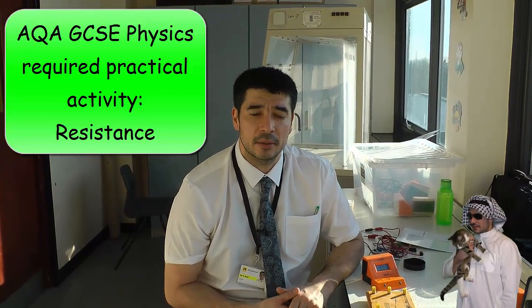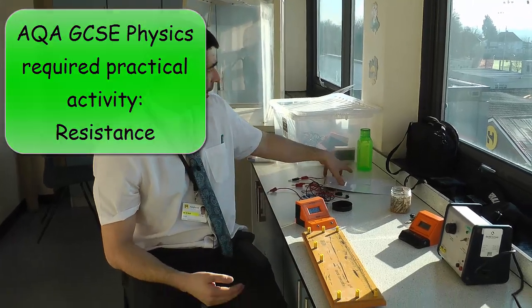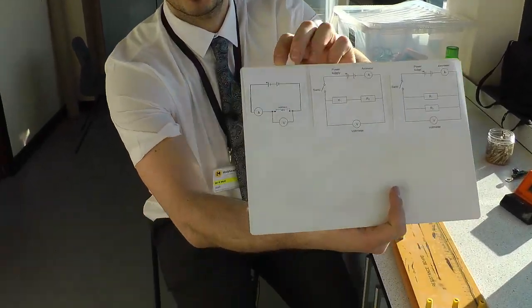Okay, so we're going to have a look at the required practical for how resistance of a wire varies with length. So that looks like this on the AQA sheet. It looks like this one here.